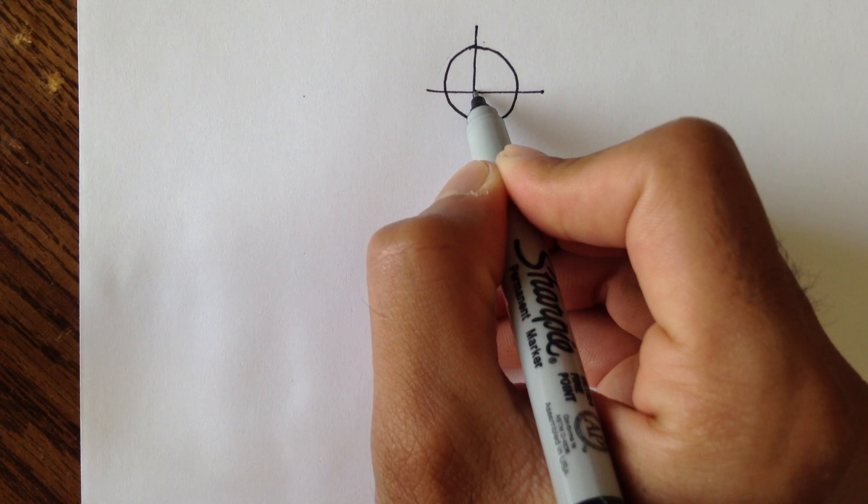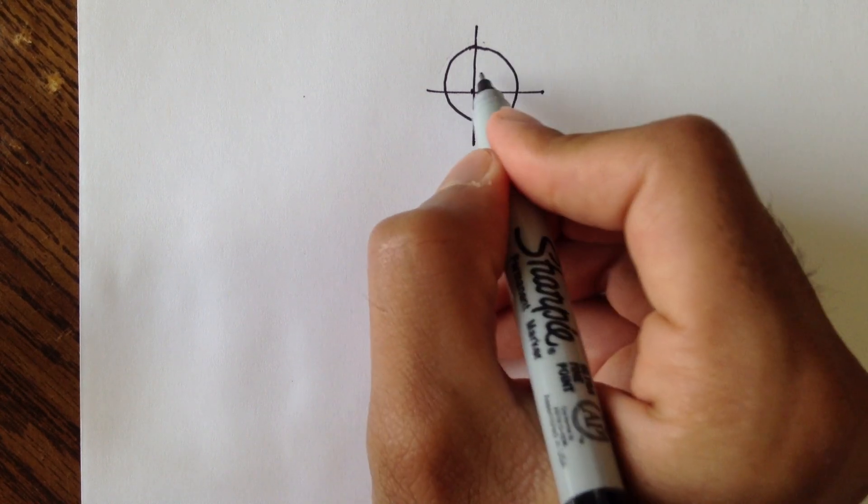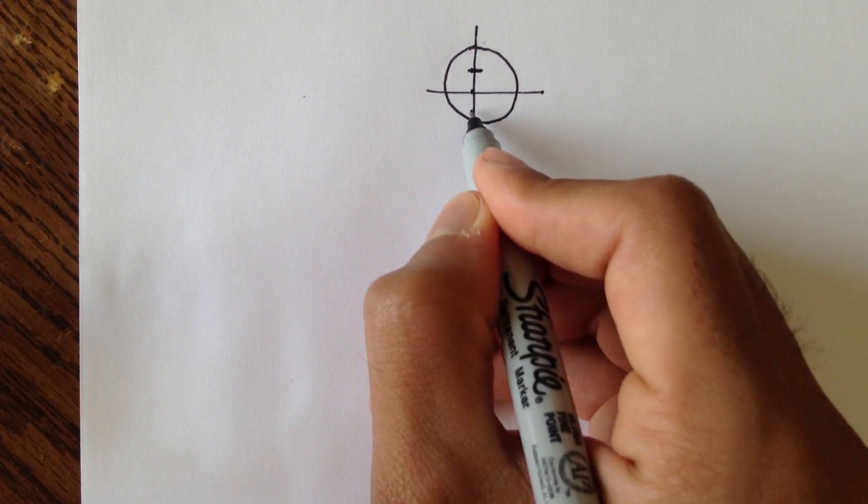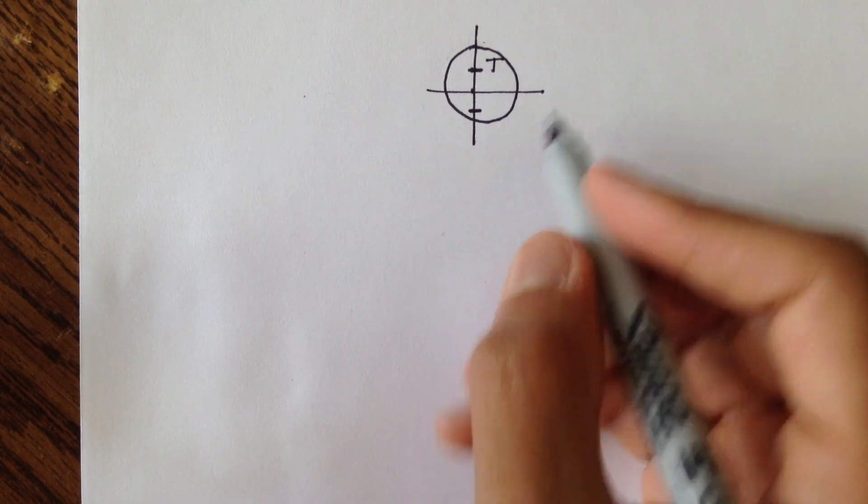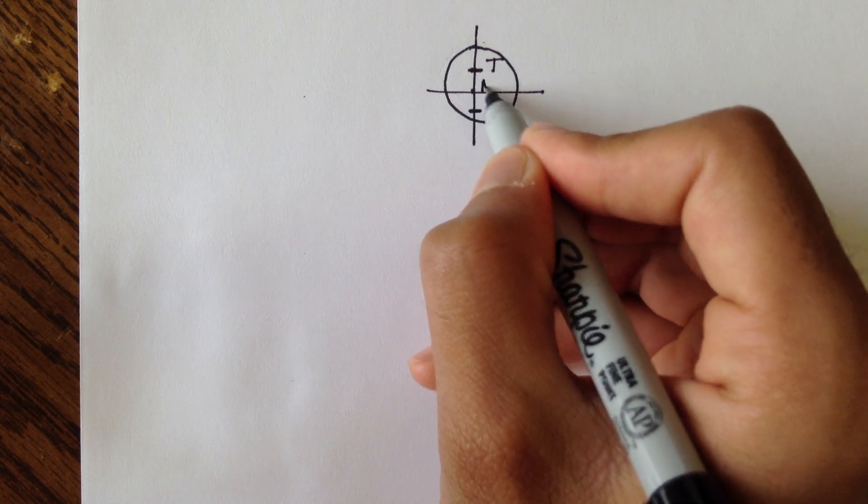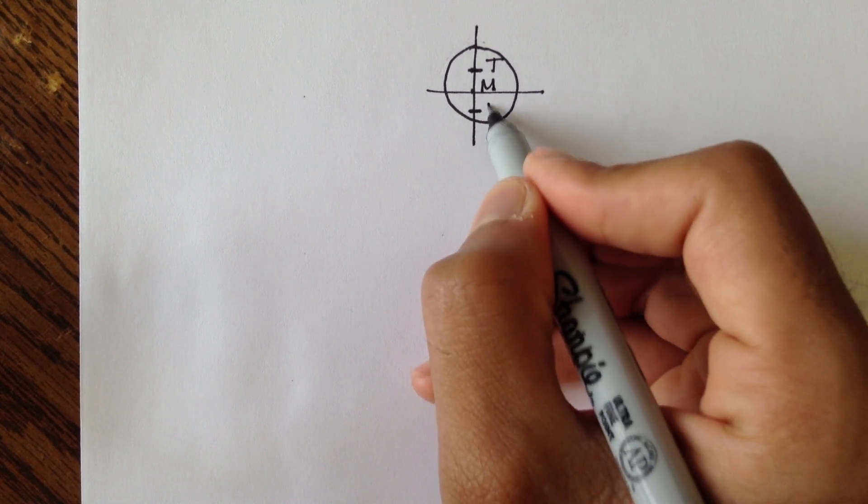you'll notice that there's a point of intersection there. There's also these marks at the top and bottom. We'll call the top mark T for top. We'll call the middle intersection M for middle, and we'll call the bottom mark B.